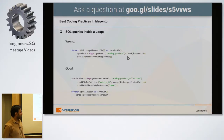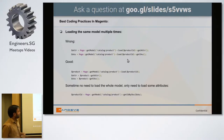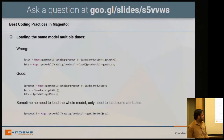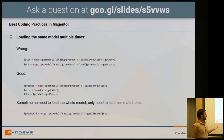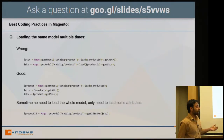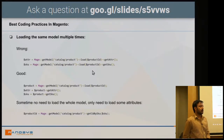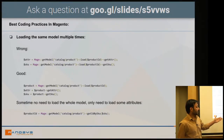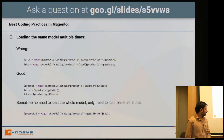The third issue is loading the same model multiple times. For example, if I need to show a product's SKU, color, and size on the front end, we often load the model, get one attribute, then load it again for another. Instead, we should load the model only once and retrieve all data from that single loaded model. If we only need one attribute like color, we can directly fetch it by product ID without loading the full model.